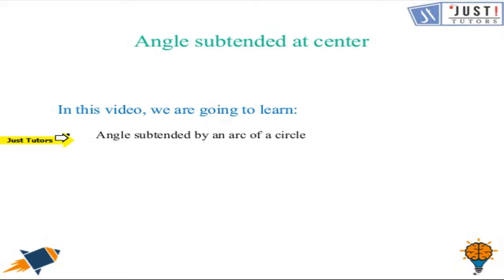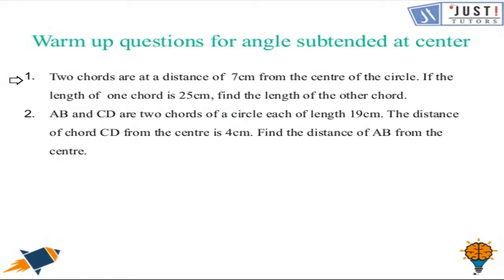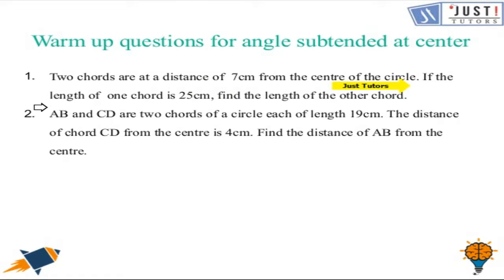Before we proceed with today's topic, let's try these two questions. In the first question, two chords are given to us at a distance of seven centimeters each from the center of a circle. If the length of one chord is 25 centimeters, we have to find the length of the other chord. As we know that chords which are equidistant from the center are equal, therefore the other chord also measures 25 centimeters.